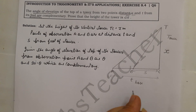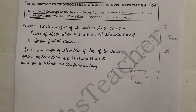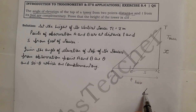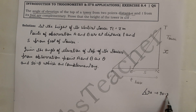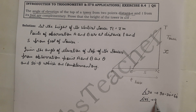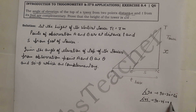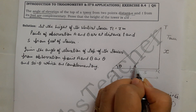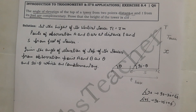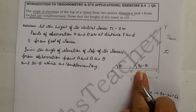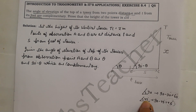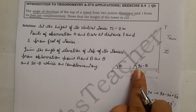For complementary angles, their sum is 90 degrees. If one angle is 30 degrees, its complement is 60 degrees. If one angle is 45 degrees, the complement is also 45 degrees. Since the two angles of elevation are complementary, I take one angle as theta, so the other angle will be 90 minus theta.